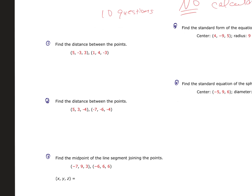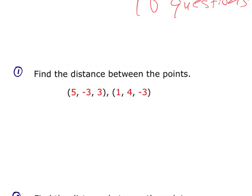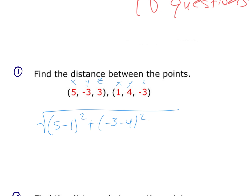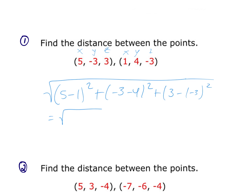Let's find the distance between the points. Remember: this is your X, this is your Y, this is your Z. So it's the square root of (5 − 1)² + (−3 − 4)² + (3 − (−3))². That gives us 4² + (−7)² + 6², which is 16 + 49 + 36.